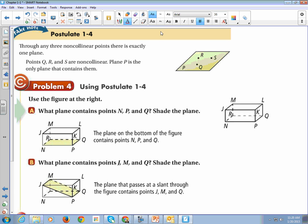Alright, postulate 1-4. Through any three non-collinear points, there is exactly one plane. So to make a plane, we need three points.